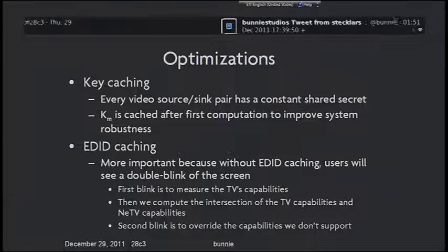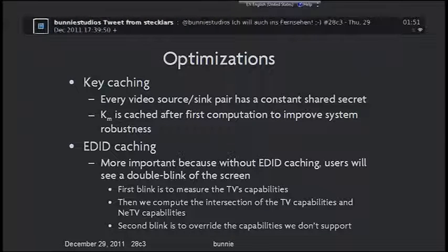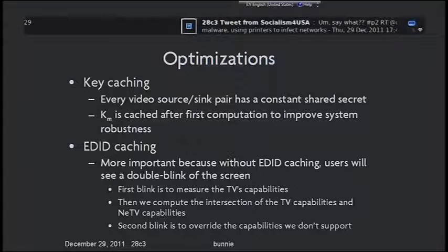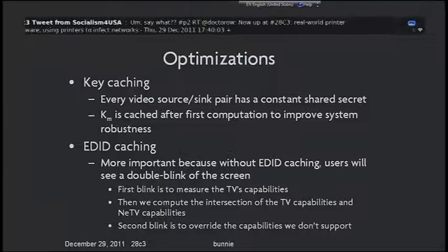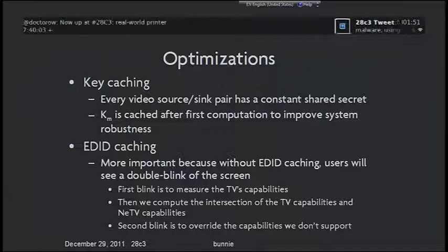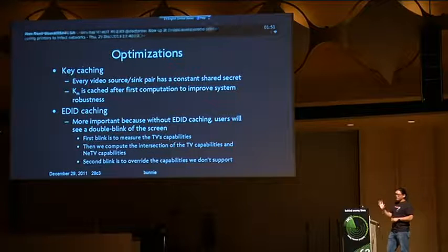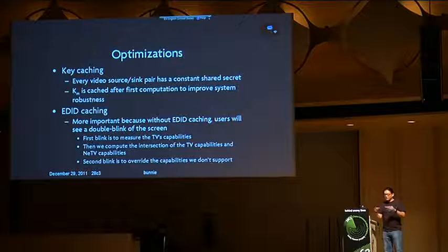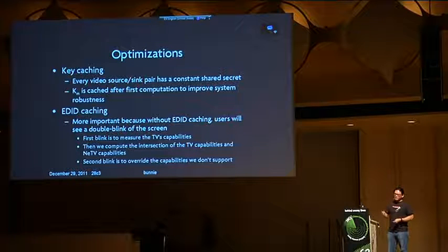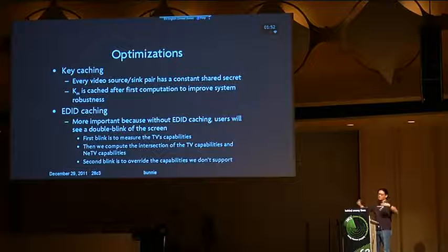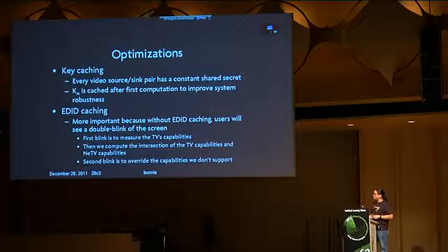There are a few optimizations. One is key caching: every video source-sync, when you plug your Blu-ray player into your TV, the shared secret never changes over the life of the device. Some devices are very fast and run a little faster than the protocol — they won't catch and you get white noise. So we cache the computed key the first time, write it to a temporary location, and check it's the same. If not, we yank the hot plug line and re-initialize. We also do EDID caching, which is more important: without it, you'd see a double blink of the screen — once to read a value and again to overwrite it. EDID caching avoids that bad user experience.